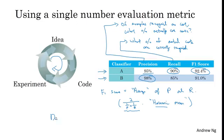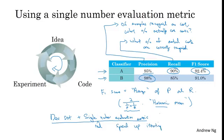So what I found for a lot of machine learning teams is that having a well-defined dev set, which is how you're measuring precision and recall, plus a single number evaluation metric—sometimes I'll call it single real number evaluation metric—allows you to quickly tell if classifier A or classifier B is better. And therefore, having a dev set plus single number evaluation metric tends to speed up iterating. It speeds up this iterative process of improving your machine learning algorithm. Let's look at another example.